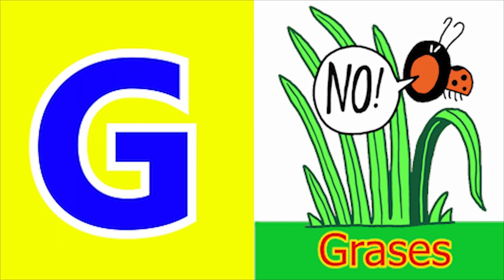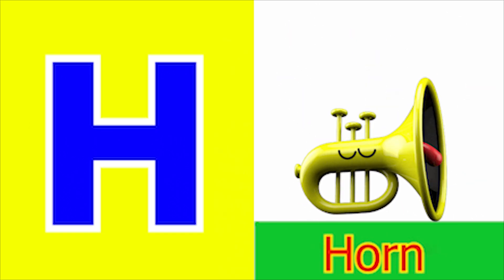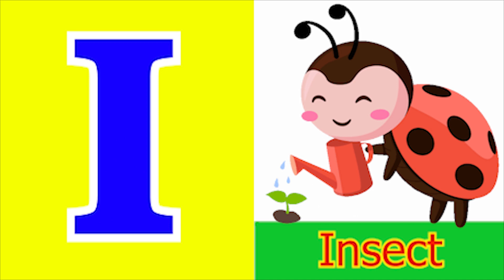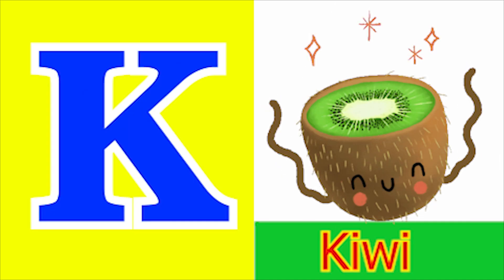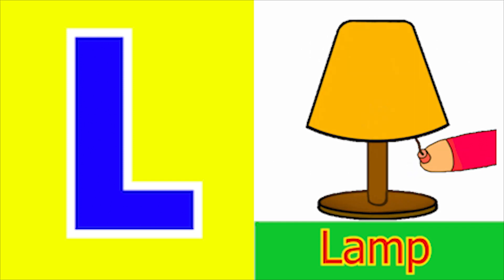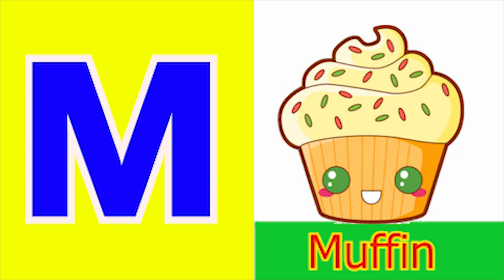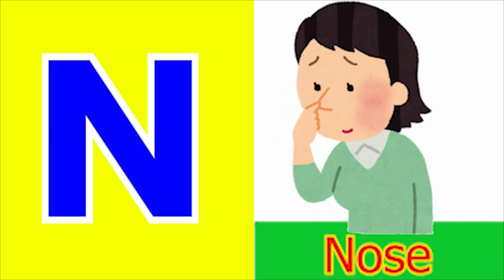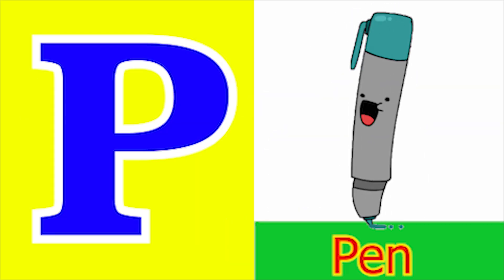G for glass and H for horn. I for insect, J for jam, K for kite, L for lamb, M for mud, N for nose, O for ox and P for pan.